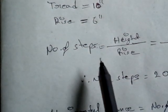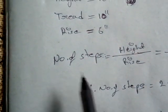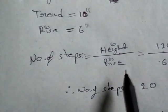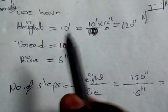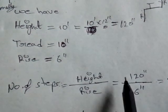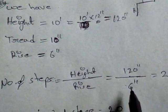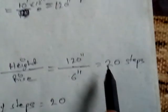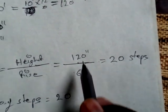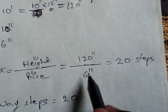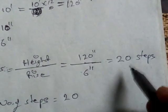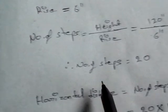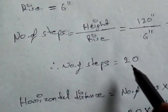Number of Steps formula: Number of Steps is equal to Height divided by Rise. Height is 120 inches, divided by Rise of 6 inches, equals 20. 120 divided by 6 is equal to 20 steps. Therefore, Number of Steps is equal to 20.